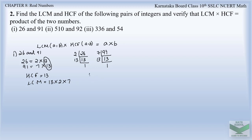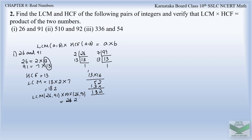So the LCM = 13 × 7 × 2 = 182. Now let us verify the equation: LCM(26, 91) × HCF(26, 91) = 26 × 91. Therefore, LCM = 182 and HCF = 13, so 182 × 13 = 26 × 91.